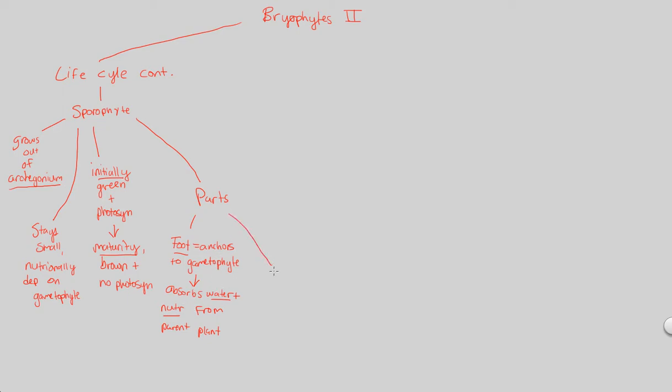Another part to remember is the seta of the sporophyte. The seta is otherwise known as the stalk of the sporophyte, of the entire sporophyte structure. Here, the stalk of the sporophyte is what takes material from the foot to the capsule. It's sort of a transport mechanism. Takes material from foot. That's what we established right over here where we get the water and nutrients. That's the material that's being taken from the foot to a structure known as the capsule. And of course, the capsule will now be our next part to look at.